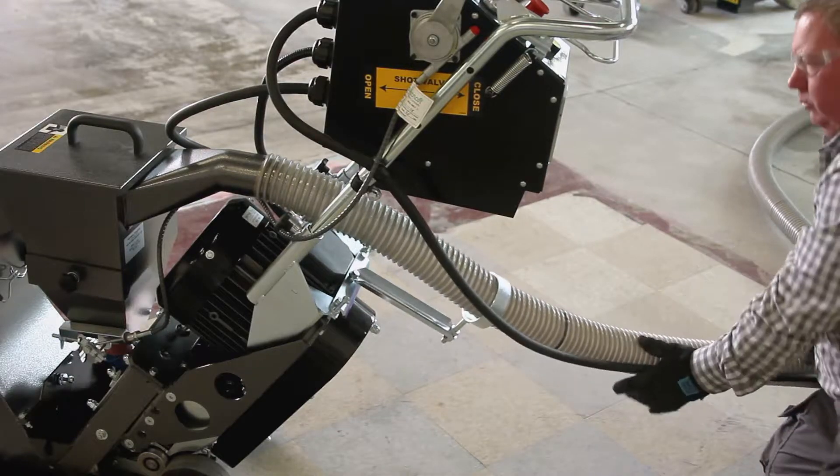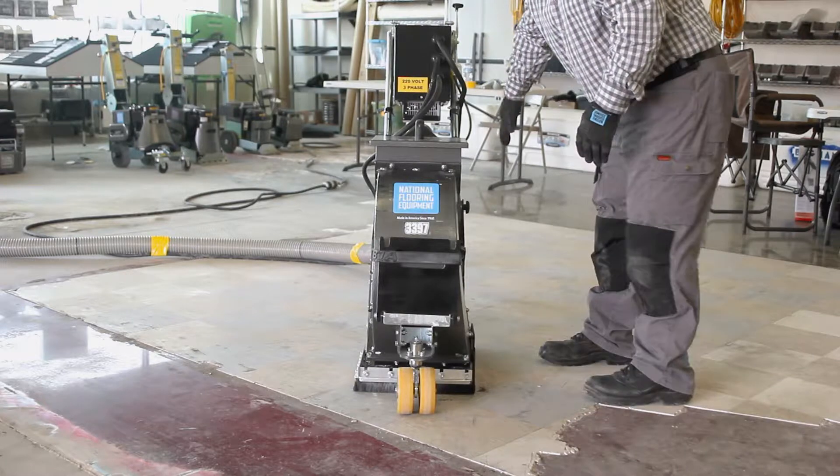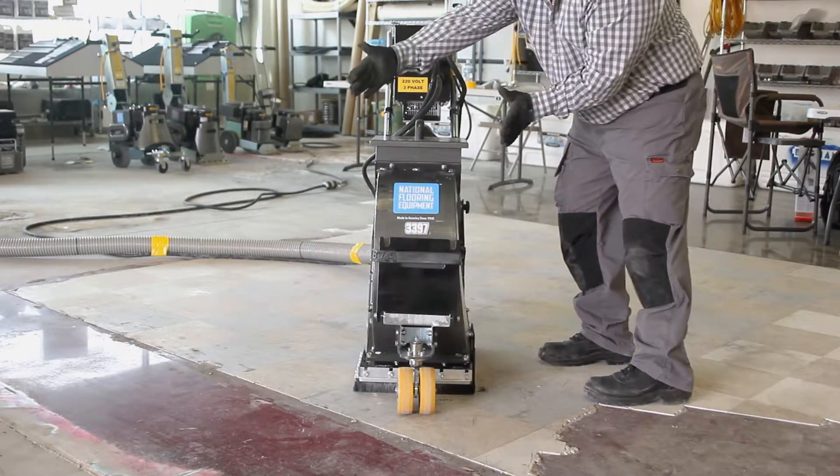The 3397 is built to lean to the right. This, along with some other features, allows the machine to be used for edging along walls.